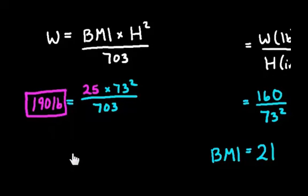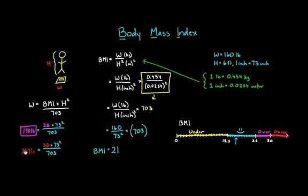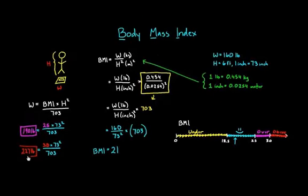And I can even do this for a BMI of 30. I can say, what about a BMI of 30? My current height, again, is 73 inches. That's not going to change. And I can do the math and find out that, in this case, my weight would be 227 pounds. So if I was 227 pounds, given my height, I would be considered obese.